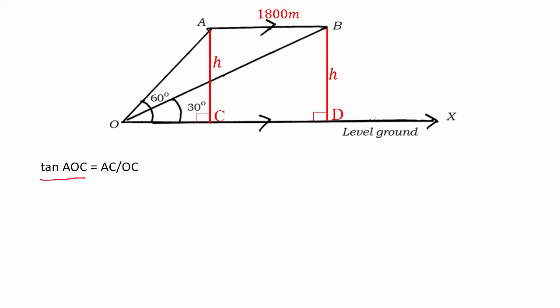Tan A, O, C is known to be 60 degrees. What is tan A, O, C? Tan A, O, C is A, C by O, C. Where is A, C? A, C is this side. Tan 60 is opposite side which is A, C divided by adjacent side which is O, C. A, C by O, C.